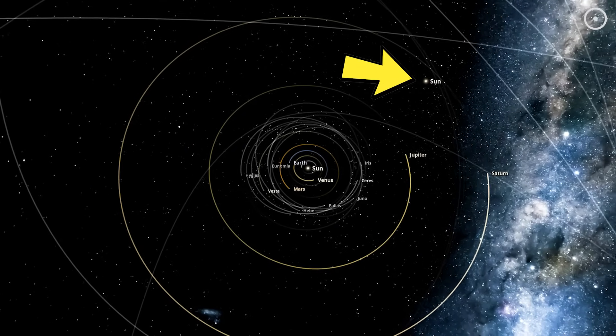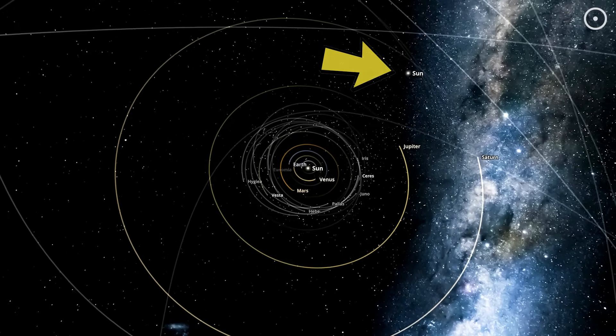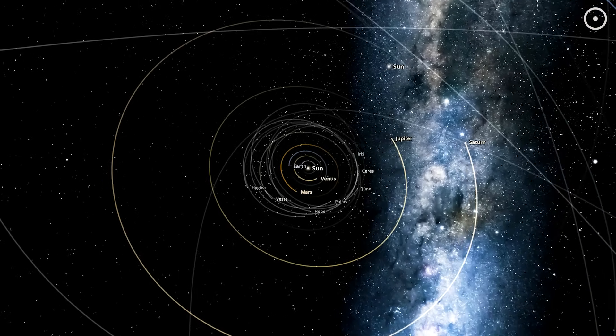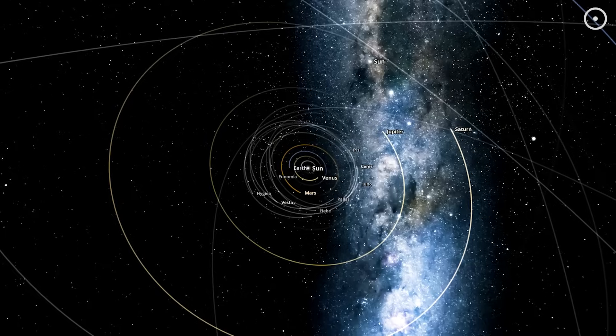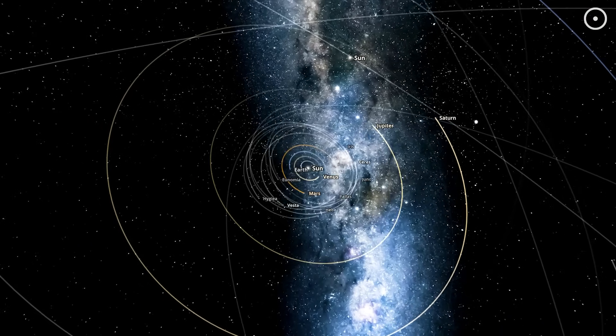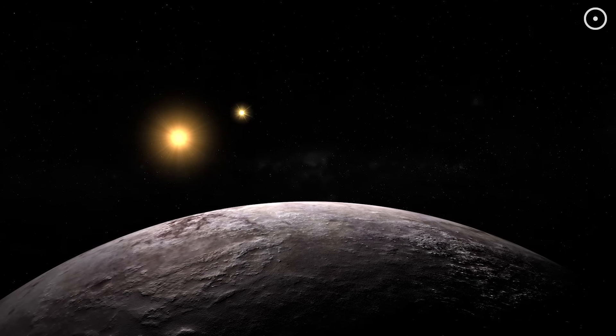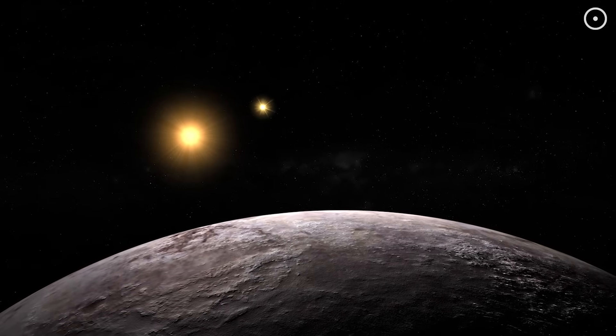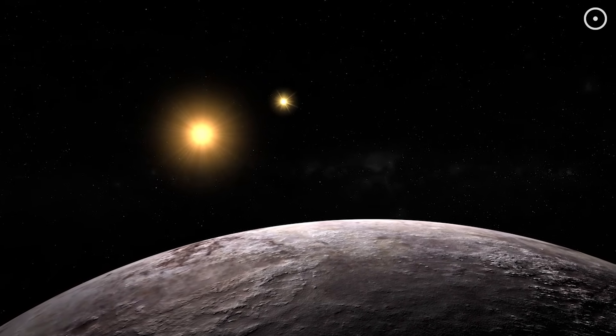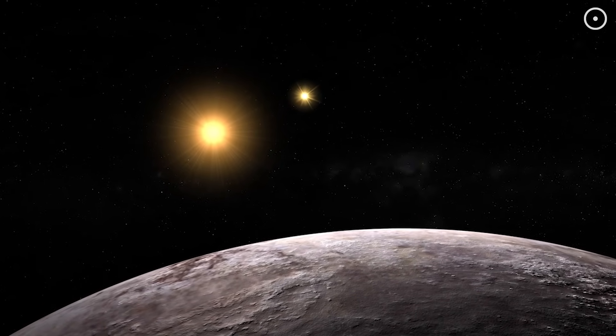Let's imagine our second sun is about 80% the mass of our current sun, orbiting at a distance similar to Saturn. While this might sound extreme, it would actually create a surprisingly stable system. We know this because we've observed similar setups in other binary star systems where planets maintain stable orbits.